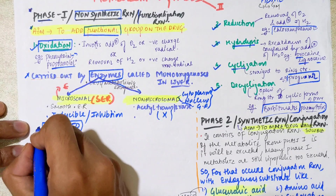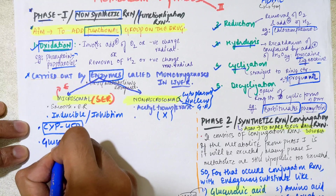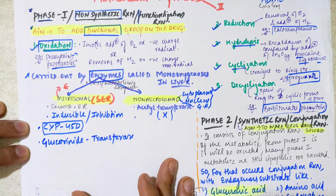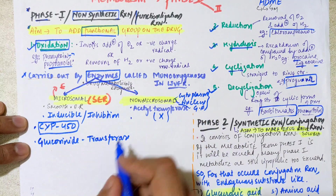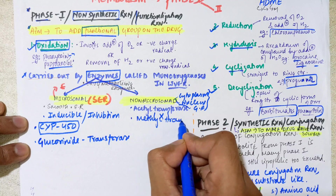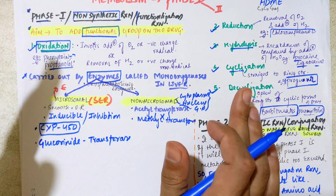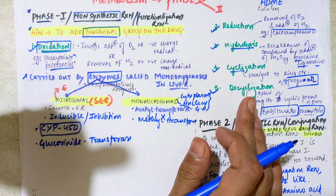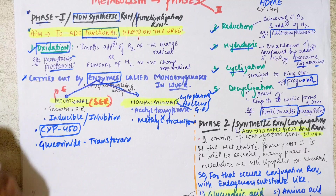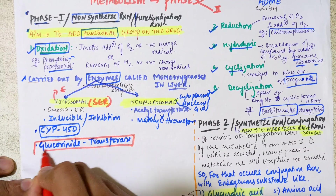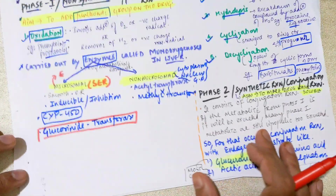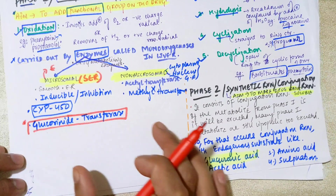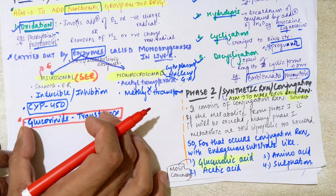A second important enzyme is glucuronide transferase. Other microsomal enzymes include acetyltransferase and methyltransferase. An important distinction: most phase one reactions are metabolized by microsomal enzymes — though some are also metabolized by non-microsomal enzymes. Glucuronide transferase is actually involved in a phase two reaction — specifically glucuronidation — but it is carried out by microsomal enzymes.